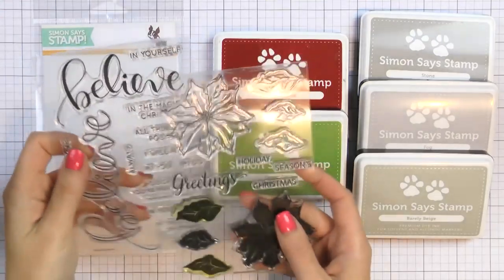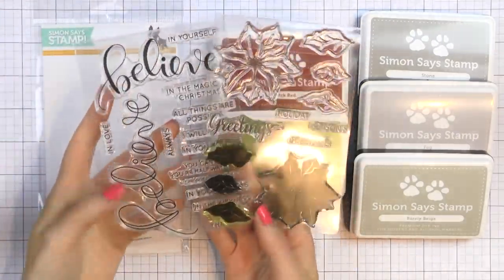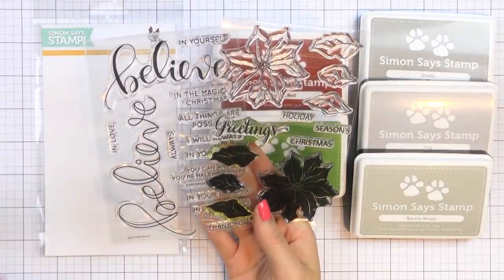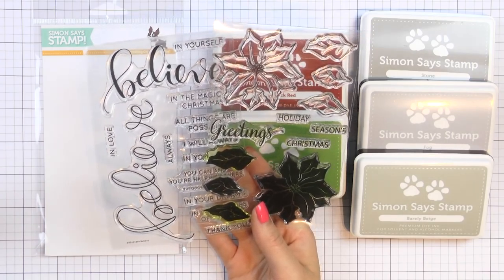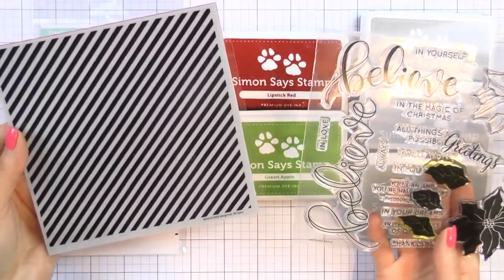I'm going to be using these two stamp sets today. I have the Poinsettia stamp and the Believe stamp set, and I'll also be using Diagonal Stripes background cling stamp from Simon.